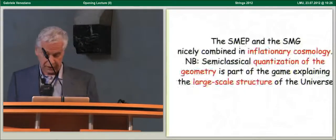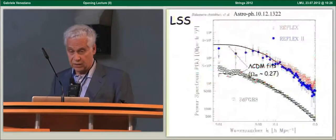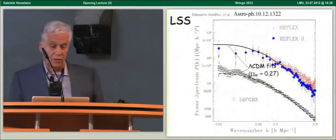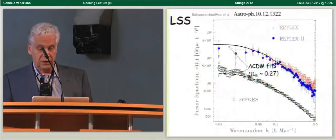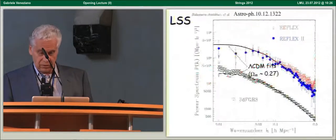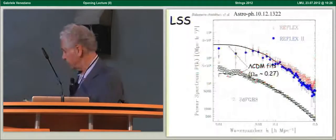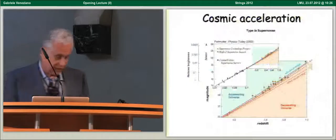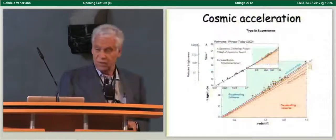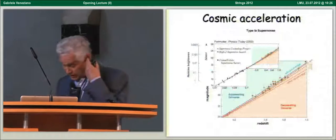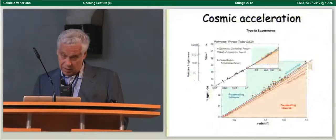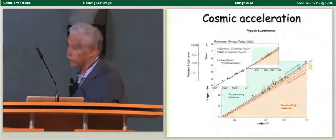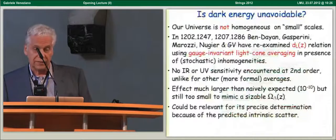And emphasize that semi-classical quantization of the geometry itself is part of the game which explains the large-scale structure of the universe in inflationary scenarios. These are fits which indicate that although omega total should be near one, cold dark matter can only account for something like 0.27, so this is indirect evidence for something on top.